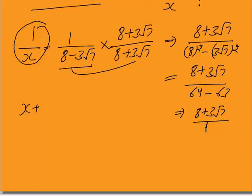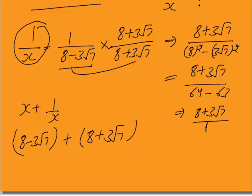Now we need to calculate x plus 1 by x. x was 8 minus 3 root 7, and 1 by x is 8 plus 3 root 7. The 3 root 7 terms cancel, and you get the answer as 16. In this way, you can rationalize denominators which are surds to make them rational numbers and then easily solve the surds.